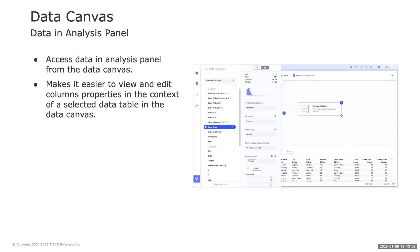We also have an improvement to the data canvas: the data-in-analysis panel is now accessible directly from the data canvas. Before 12.2, you had to leave the data canvas to open this panel. This makes it much easier to view and edit column properties in the context of a selected data table within the data canvas.